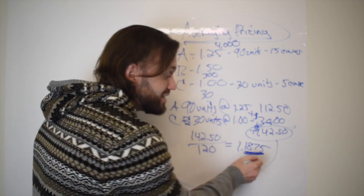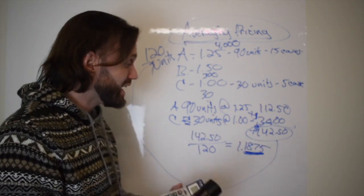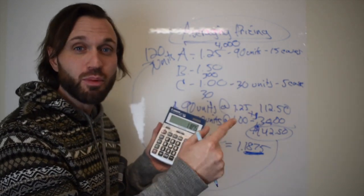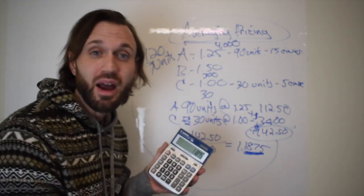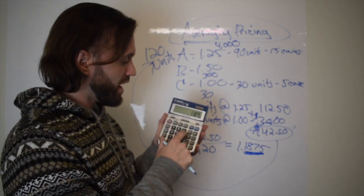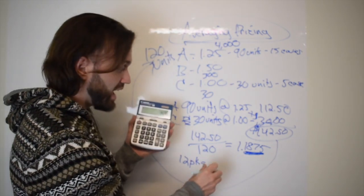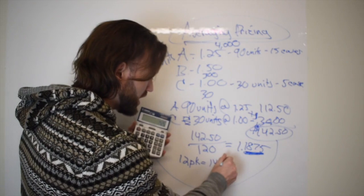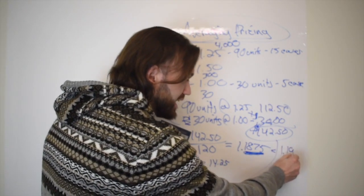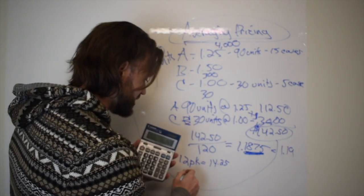It's important when you have your cost of goods to leave the full decimal — don't round $1.1875 up to $1.19. Here's why: if we're calculating a 12-pack, $1.1875 × 12 = $14.25. But if you rounded up to $1.19 first, then $1.19 × 12 = $14.28.